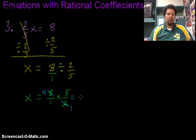Now I can multiply straight across, giving me 20 over 1. And so x equals 20.